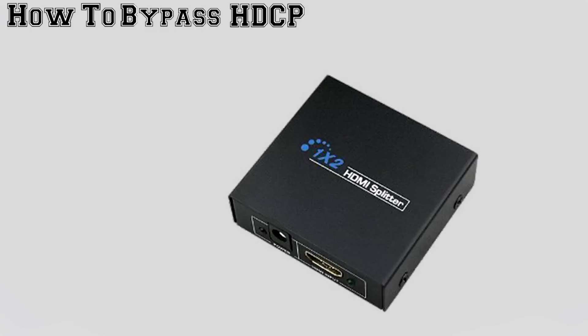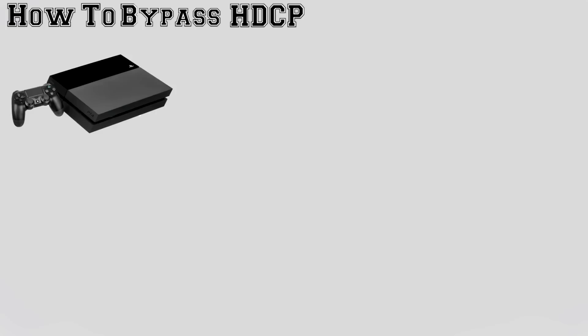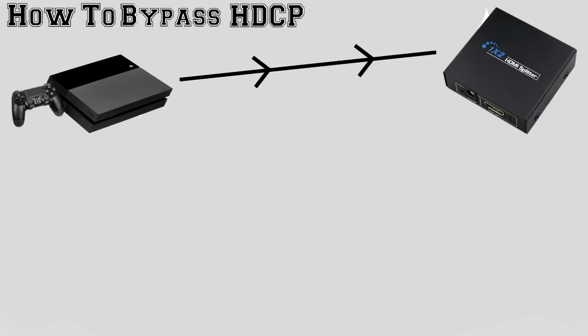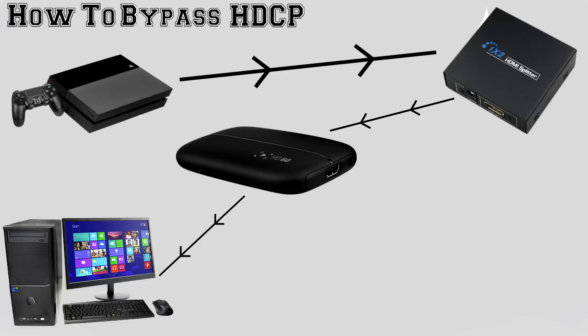But by adding the HDMI splitter, we are able to bypass the HDCP signal completely. Now my console connects to the splitter, passing through that to the Elgato, which then receives a fully HDCP-decoded connection and can pass this on to my PC for recording without any hitches whatsoever.